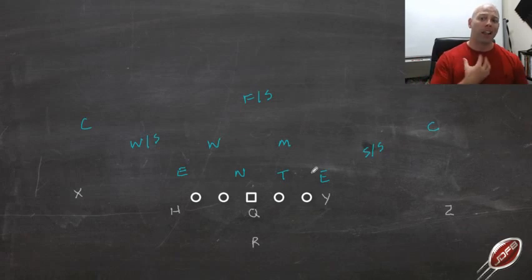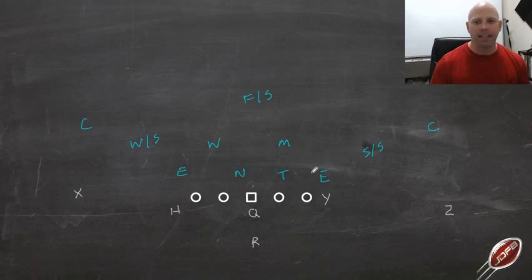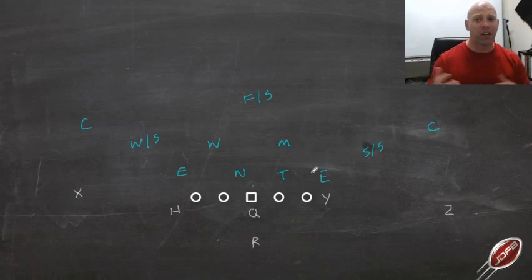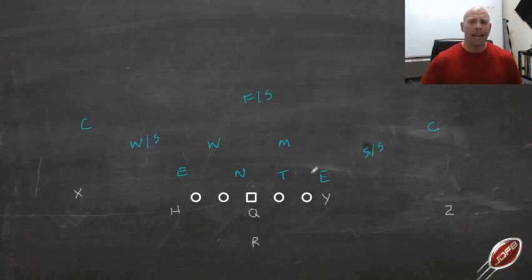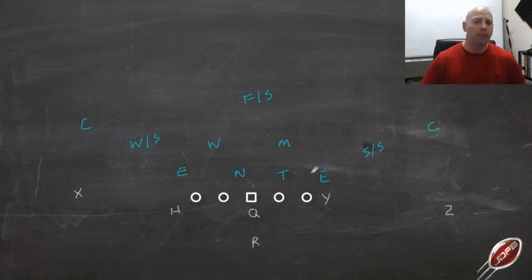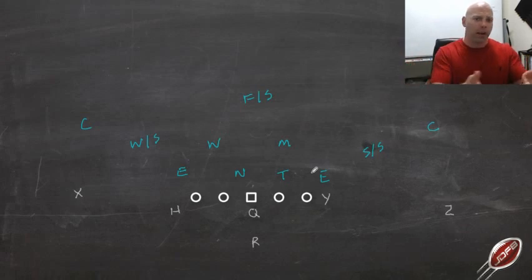The way I learned it growing up, the 7-technique is inside shade of the tight end, so I tend to drift back and forth between calling it a 7 and calling it a 6I. Neither one's right or wrong. In a 4-4 and a 4-2-5, a lot of people will play a 7 inside shade because your defensive end in those systems is going to be your C-gap defender for the most part.